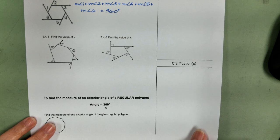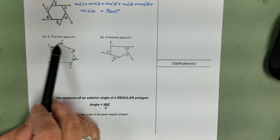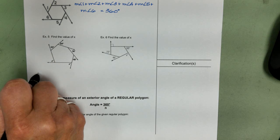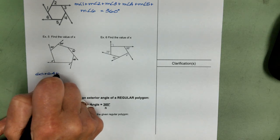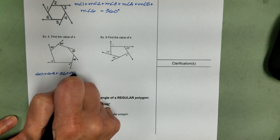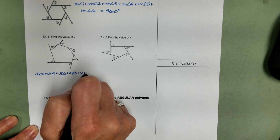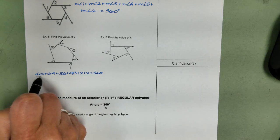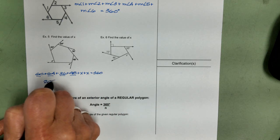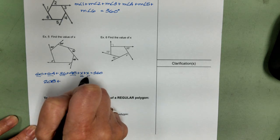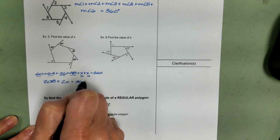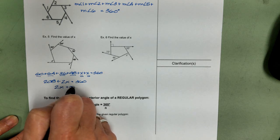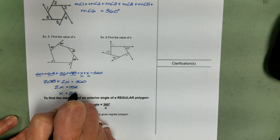So let's look at example five. We want to find the measure of x. So I have one, two, three, four, five, six. It's still going to add up to 360. So I'm going to start over here and go clockwise. 60 plus 64 plus 36 plus 48 plus x plus x. That has to equal 360. Combine all your like terms. In this case, it will be the constants. 208 plus 2x equals 360. Subtract 208 from both sides. We get 2x equals 152. So x equals 76 degrees.